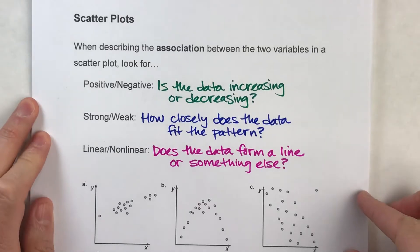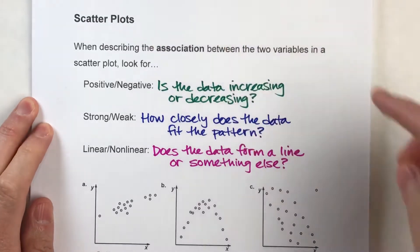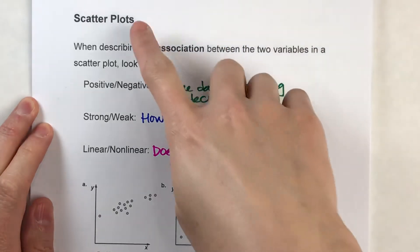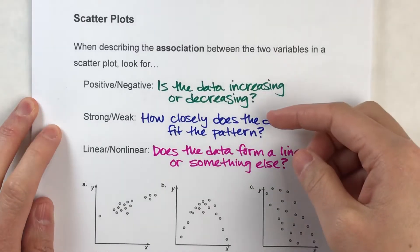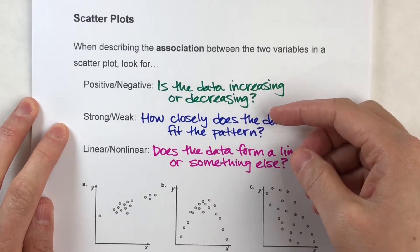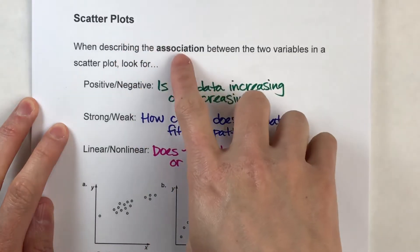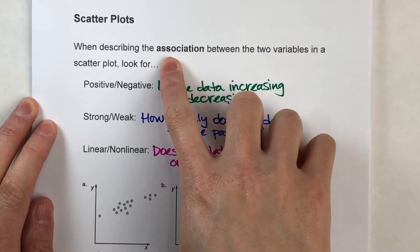So today, we are going to be analyzing scatterplots. The whole point of a scatterplot is to determine if two variables are related in some way. We call that relationship an association.